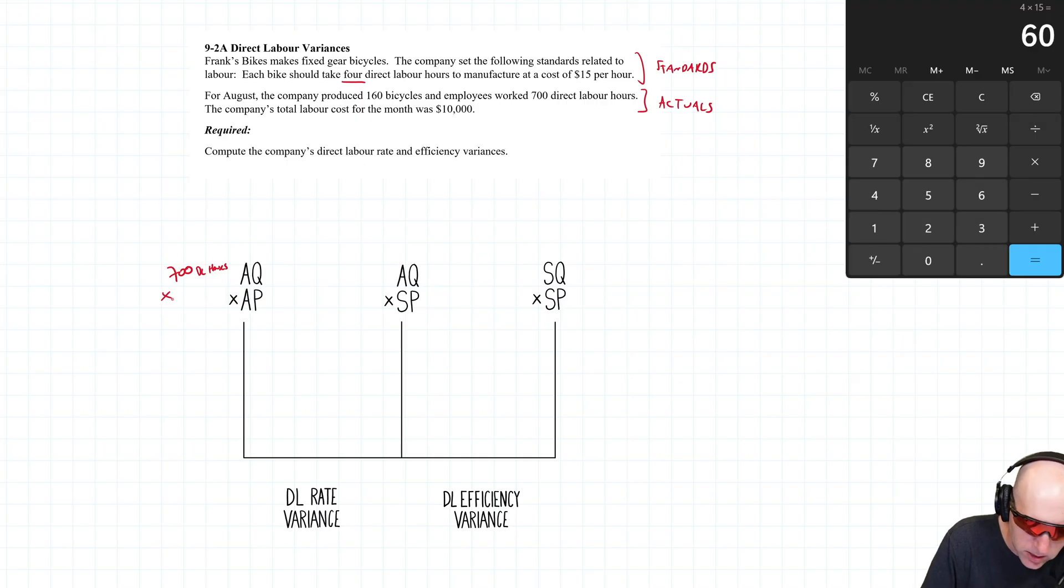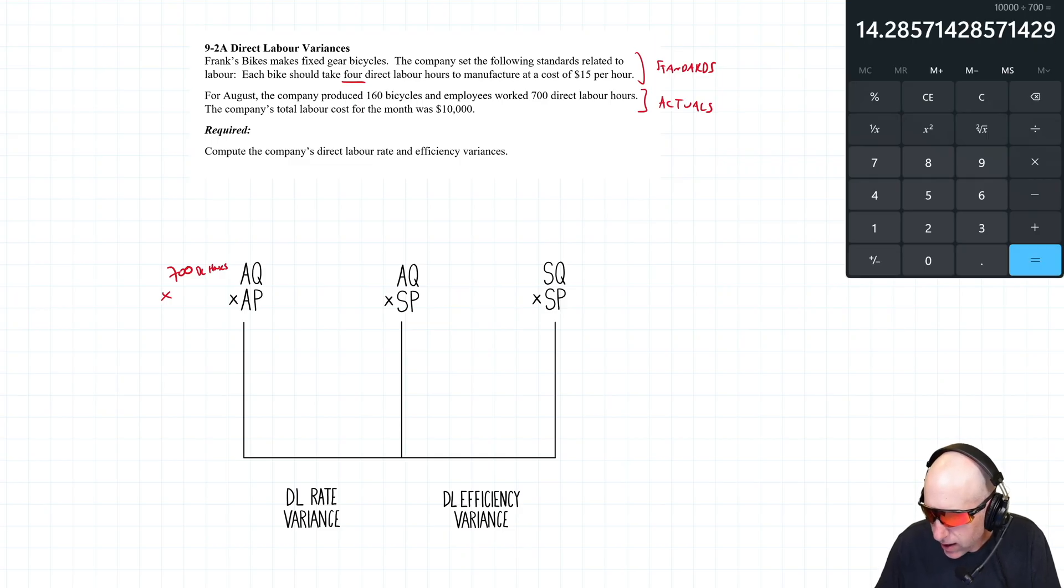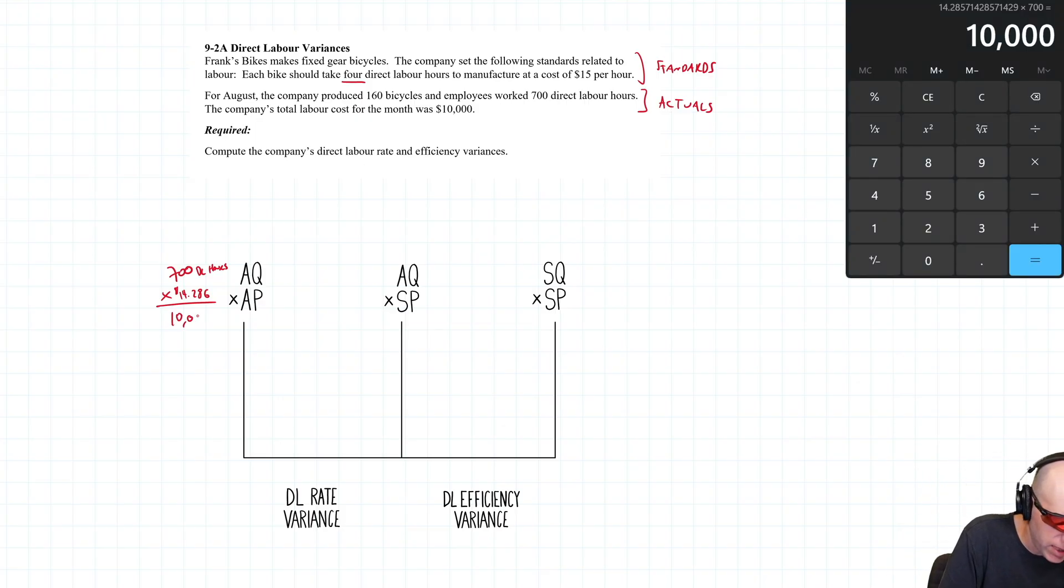Our actual price per hour: we paid $10,000. $10,000 divided by 700 hours is $14.286, essentially $14.29 an hour. 700 × $14.286 = $10,000. That's the actual amount paid for labor.